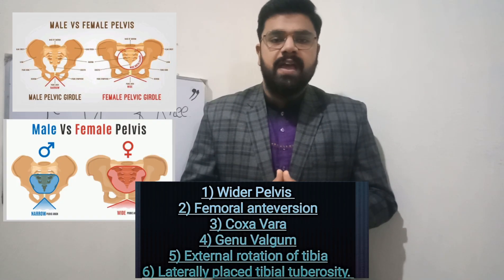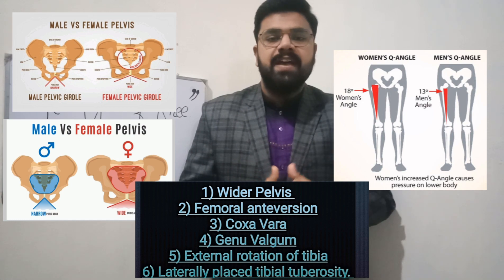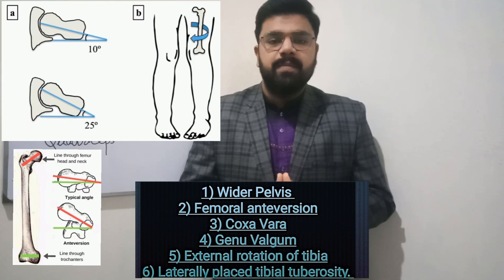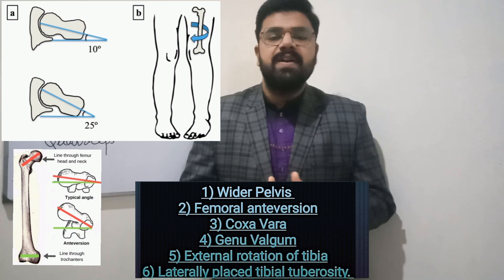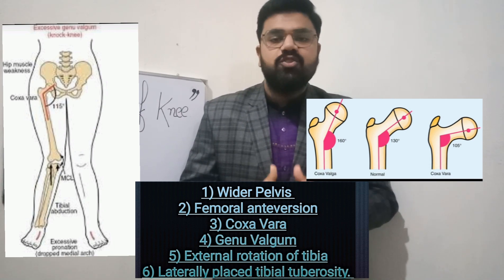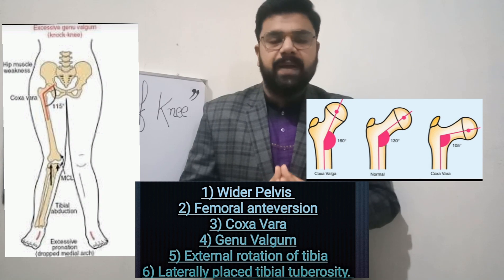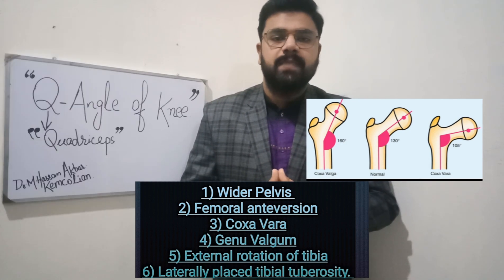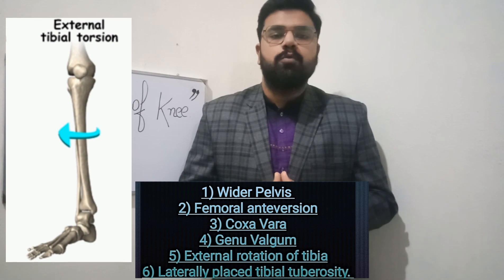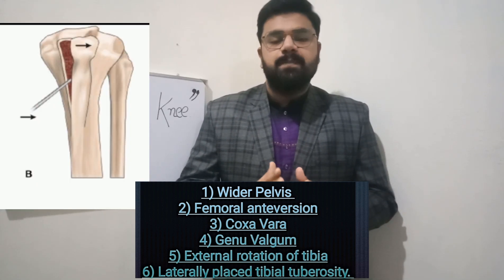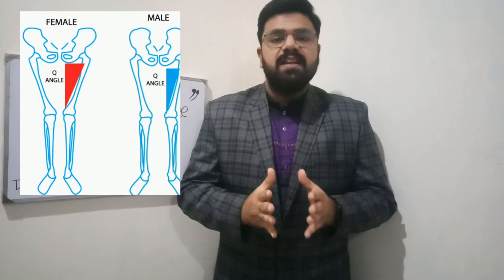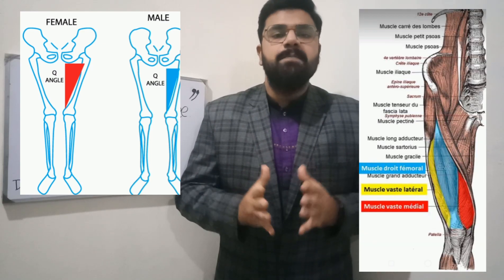Now we will discuss the conditions in which Q angle increases. Number one is a wider pelvis — females have a wider pelvis compared to males, therefore the Q angle is greater in females. Second is femoral anteversion, meaning the femur is rotated internally. Number three is coxa vara, where the angle between the neck and shaft of the femur is lower than the normal value of 135 to 145 degrees. Number four is genu valgum. Number five is when the tibia is rotated externally. Number six is when the tibial tuberosity is placed in the lateral direction.